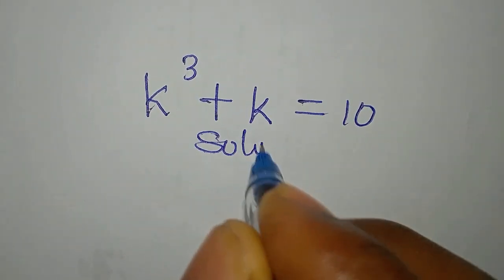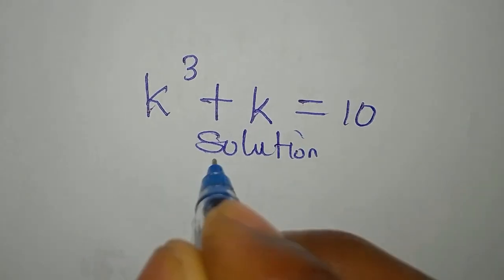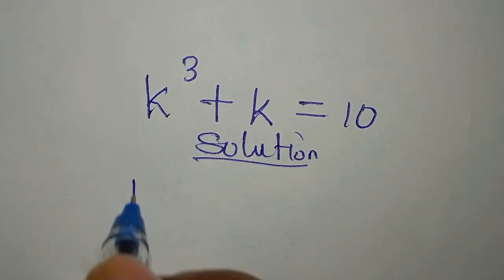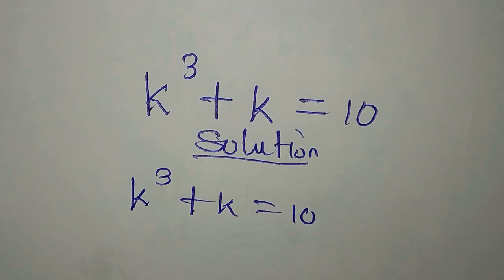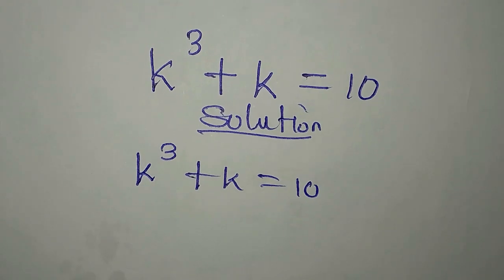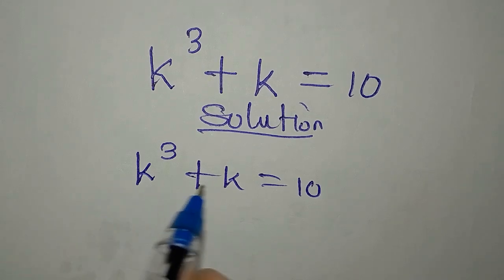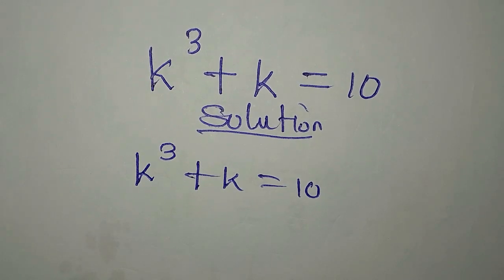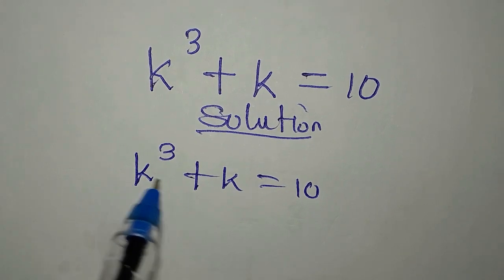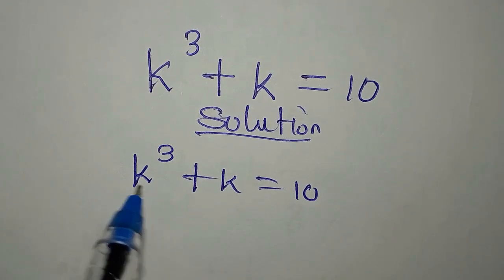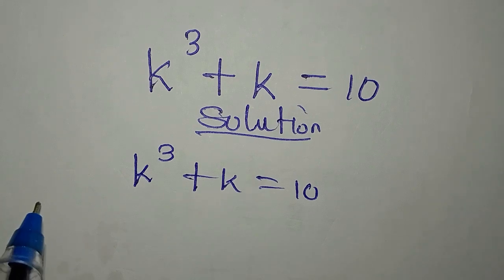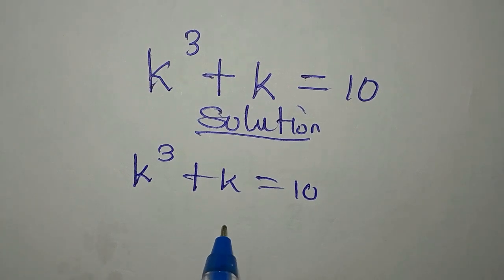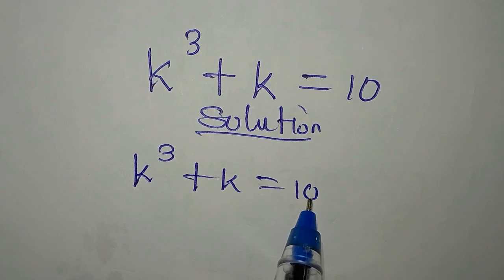We have another problem: k to the power of 3 plus k equals 10. Some students who are not grounded in mathematics will think we can add this up to get k to the power of 4, but that is wrong — you cannot add these up. One thing you can do is factorize k out, but there is no need to factorize since we do not have zero on the other side.